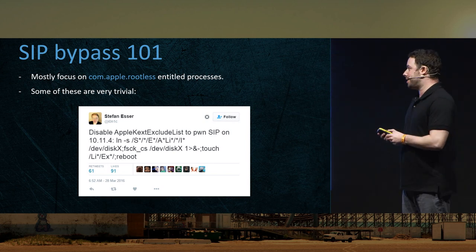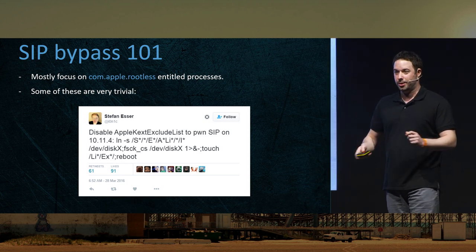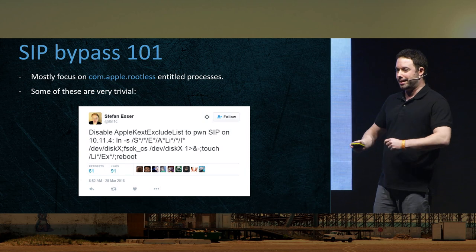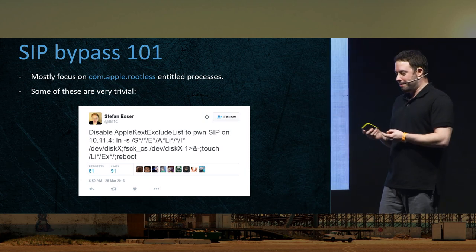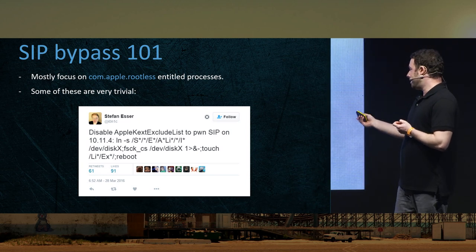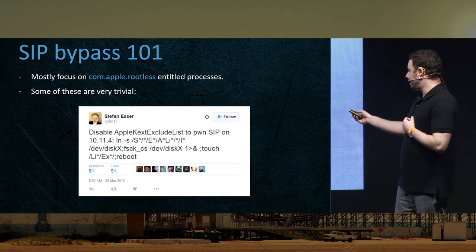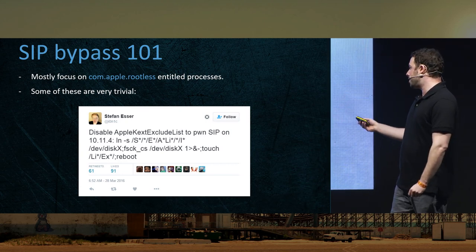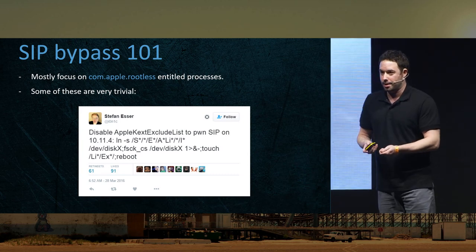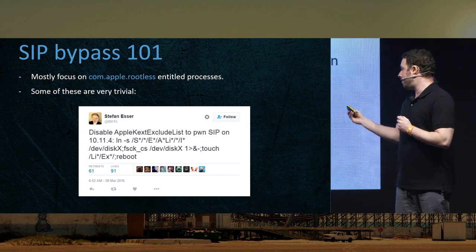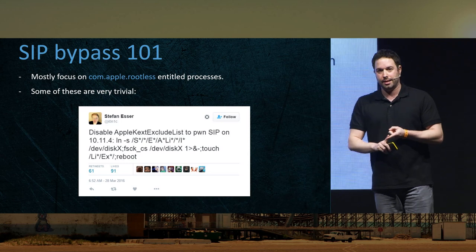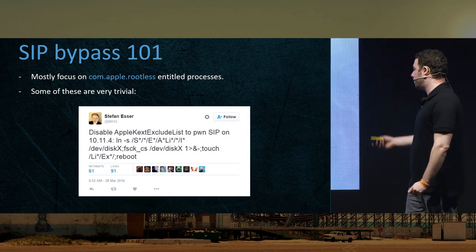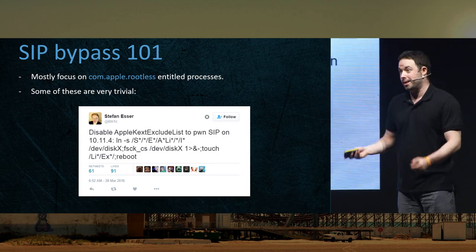When I started looking at SIP bypasses, I saw really funny stuff like this tweetable exploit from 2016. It was a SIP bypass — I call it winning by points and not by knockout. There was a binary called fsck_cs supposed to fix a file system. This thing would trash a SIP-protected file with data the attacker doesn't control, but just trashing it invalidated another protection — specifically the kernel extensions excluded from macOS. I wanted to do something like that as my learning process into macOS.